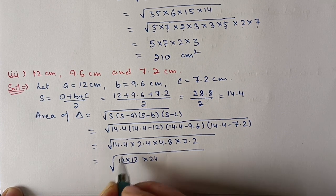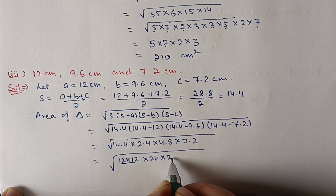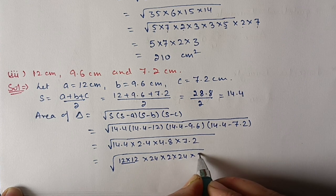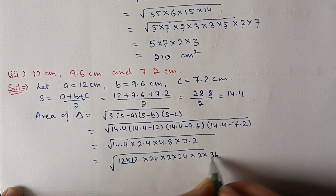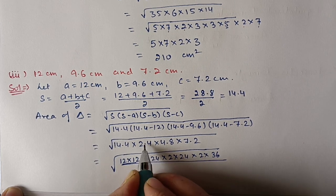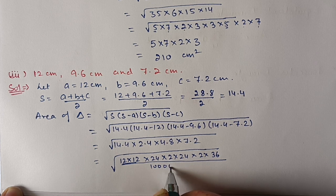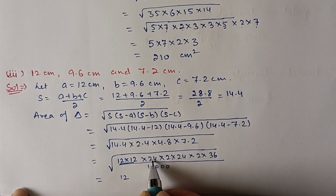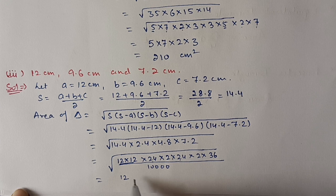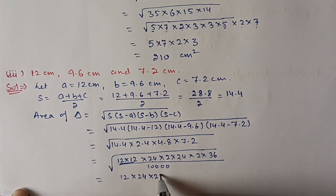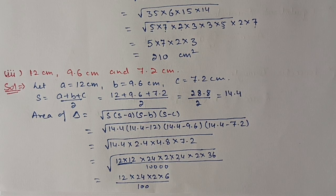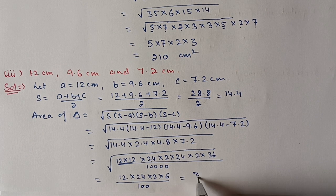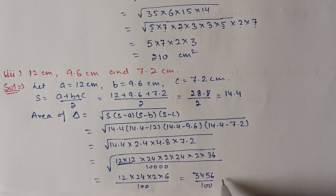We write 24 as-is, 48 as 2 × 24, and 72 as 2 × 36. Since we removed 4 decimal places, we include 10,000 in the denominator. After pairing: 12 comes out, 24 comes out, 2 comes out, and 36 = 6². After multiplication we get 3456/100, which is 34.56 cm².